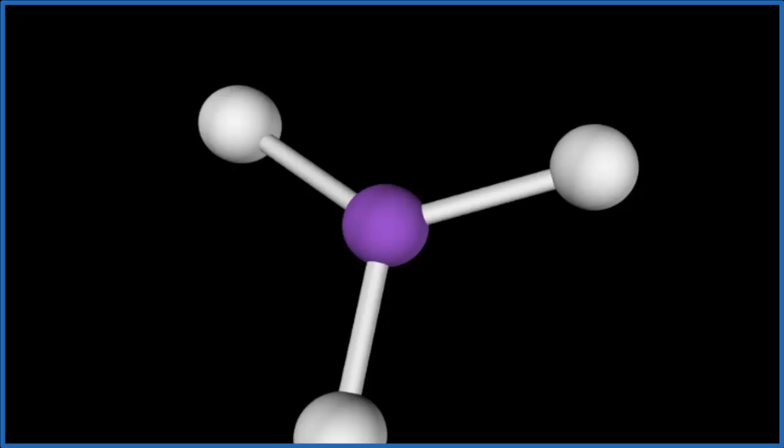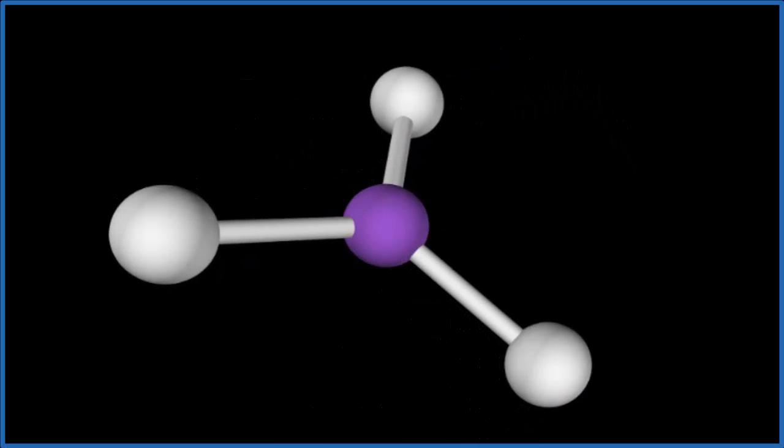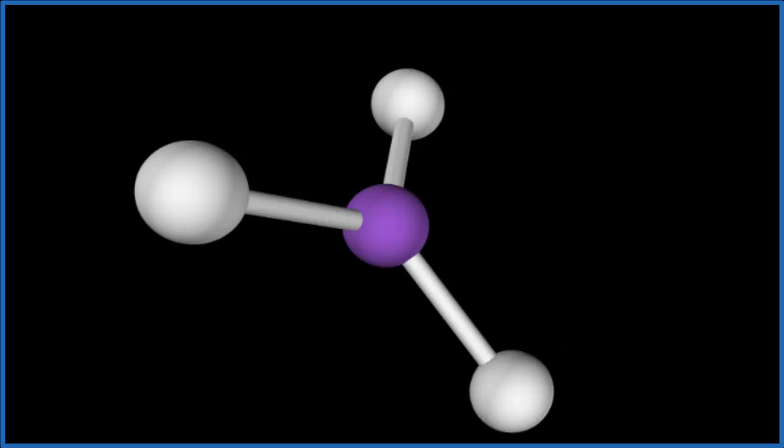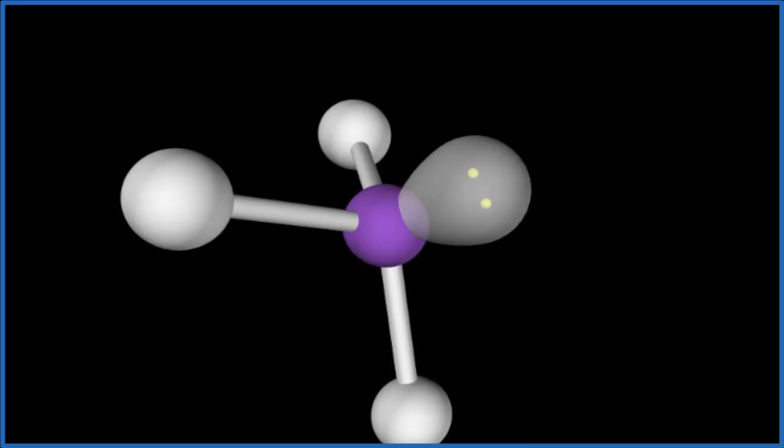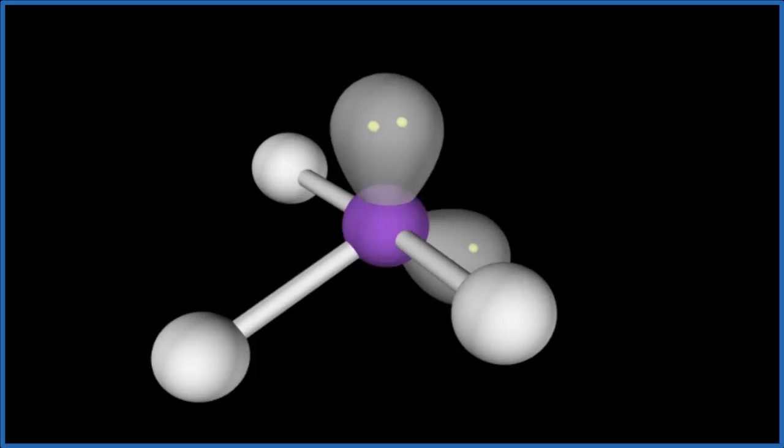So at this point, we have this trigonal planar molecular geometry, but we have to remember those two lone pairs. So let's add the lone pairs, because they also occupy space. So we put the lone pairs, there's one, we get this shape here, and let's add the other one.